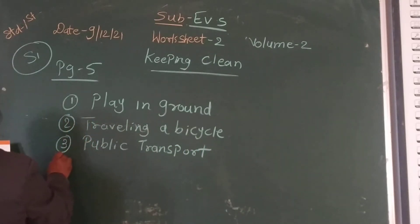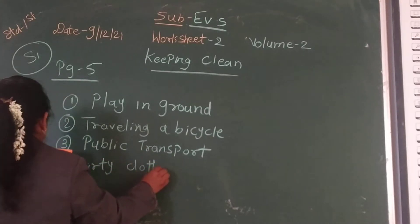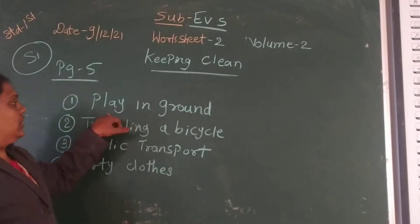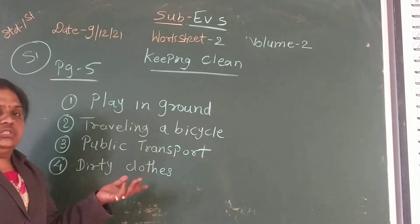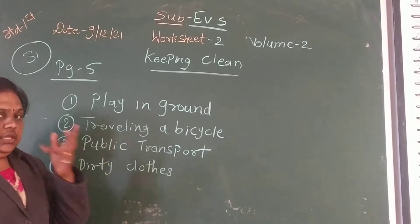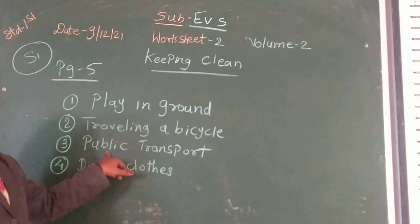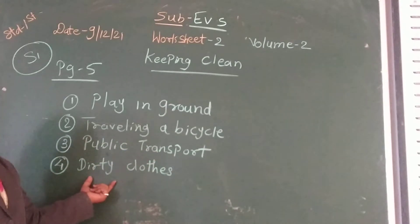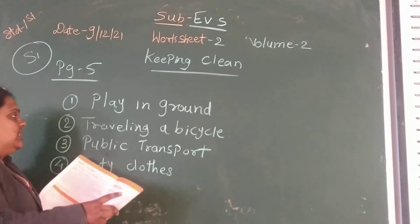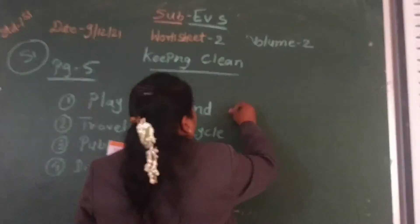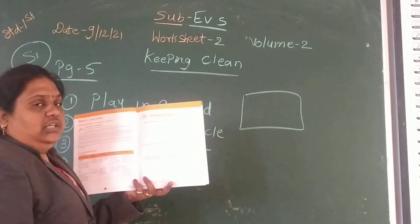Third, using public transport — means when we are going outside. Fourth, carrying dirty clothes. So: playing in the ground, travelling by bicycle, public transport, and dirty clothes. You also have to draw one of them in the box provided beside the question.